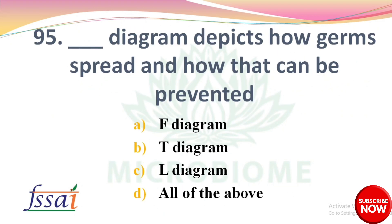DASH diagram depicts how germs spread and how that can be prevented. Options: A) F diagram, B) T diagram, C) L diagram, D) All of the above. The right answer is option A: F diagram.